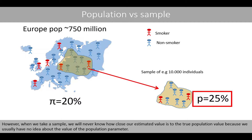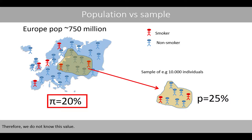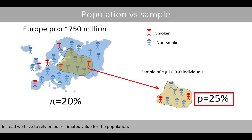When we take a sample, we'll never know how close our estimated value is to the true population value, because we usually have no idea about the value of the population parameter. Therefore, we do not know this value. Instead, we have to rely on our estimated value for the population. This is why we use different statistical tests to show the uncertainty of our estimated parameters.